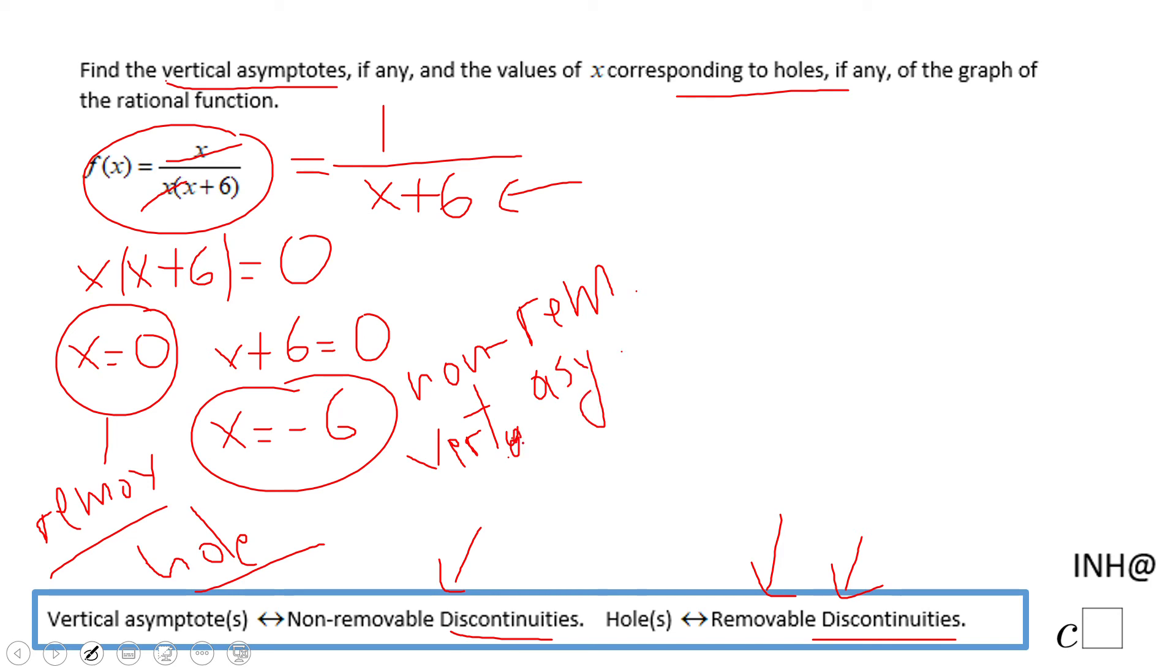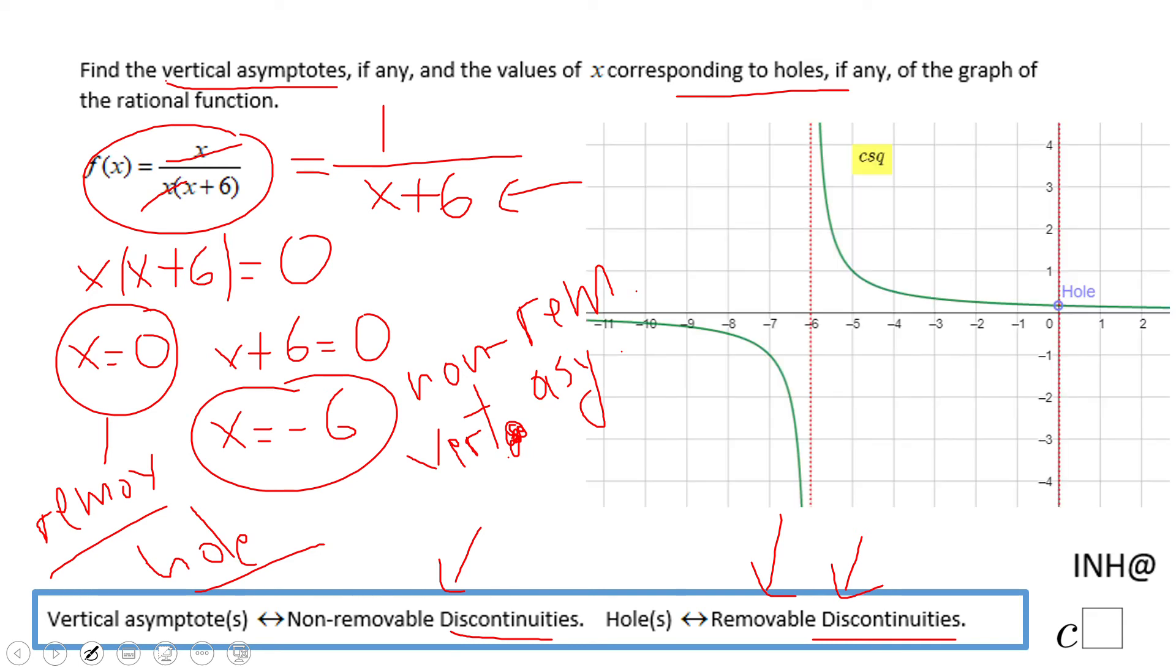Okay, so one more time: removable gives you a hole, non-removable gives you a vertical asymptote. And you can see this in this graph. We have a hole here, not a vertical asymptote.